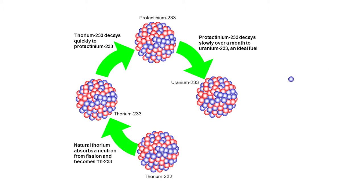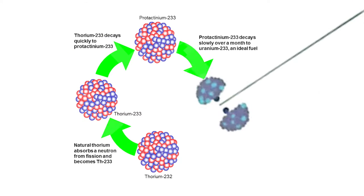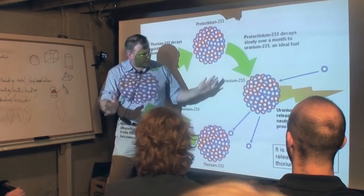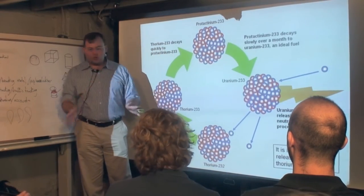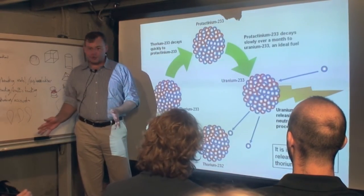Uranium-233, if you hit it with a neutron, it will fission. In addition to releasing all that energy, it will release two or three additional neutrons.